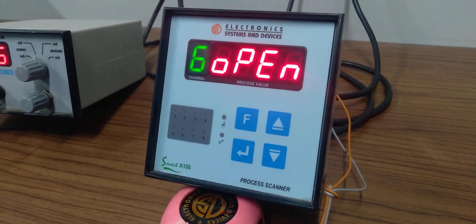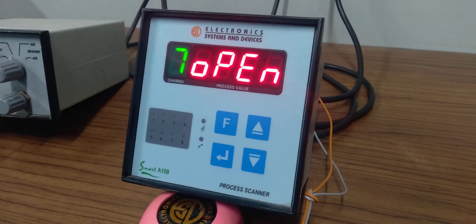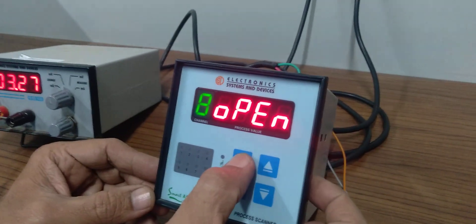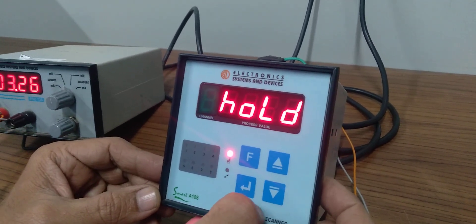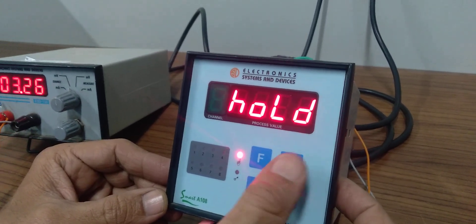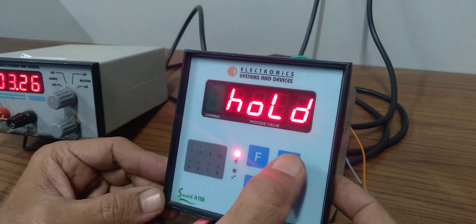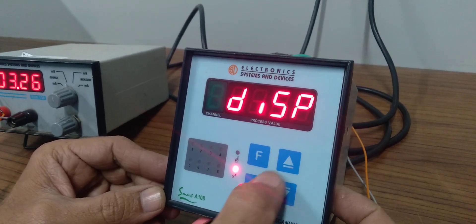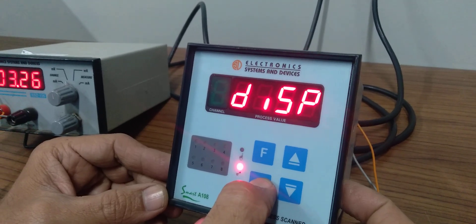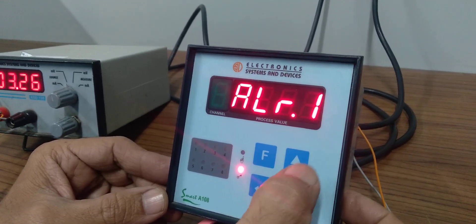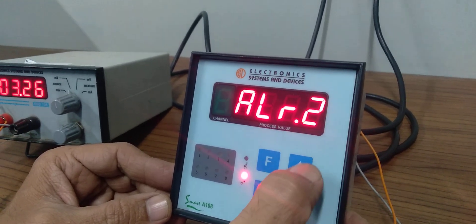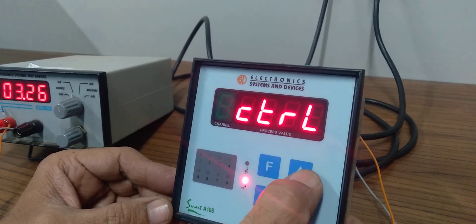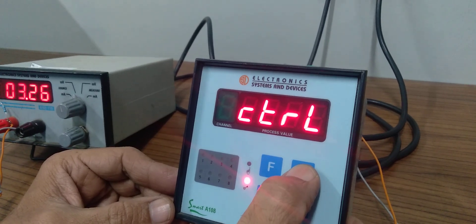We'll check the settings now. If you press the function key, you'll see the options: hold mode, display, increment, alarm 1, alarm 2, and control. Control has the relay logic, the hysteresis, and the number of channels you want to control.